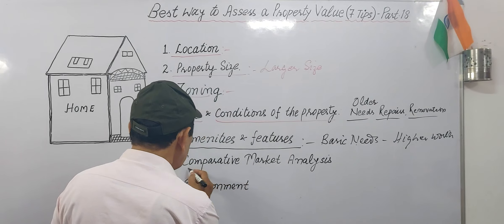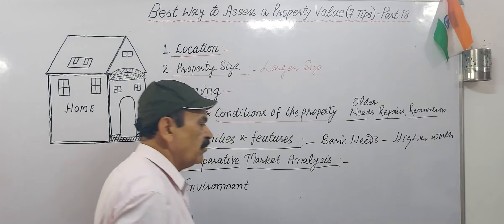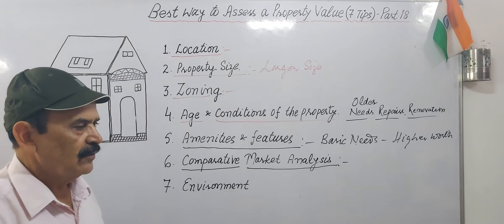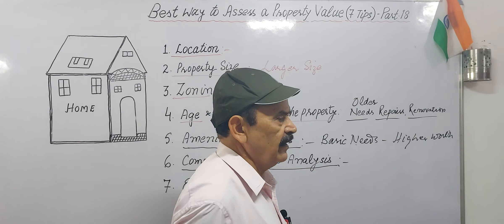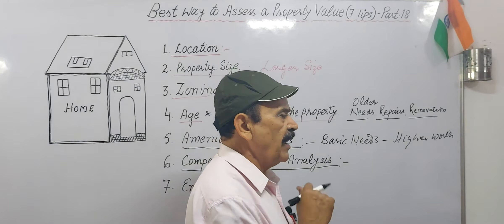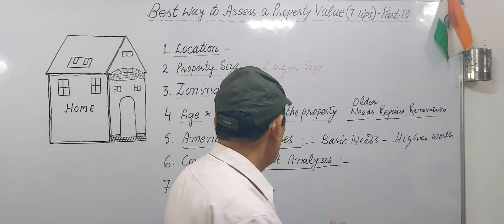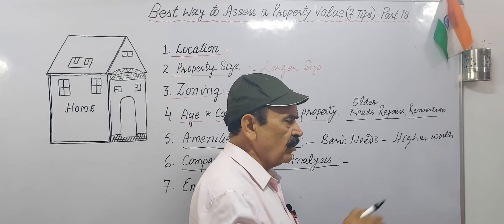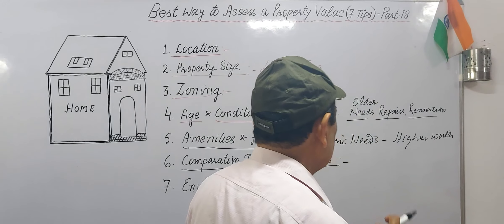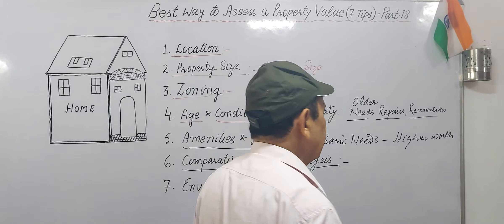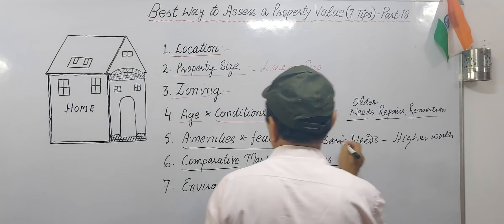The sixth factor is comparative market analysis. Whenever you go to purchase a property or make an offer, do a comparative market analysis. You can get information from online estimators, and you can also check at what rate nearby properties have recently been sold. This comparative market analysis is necessary before making any investment decision.